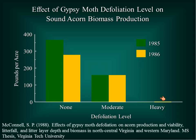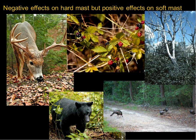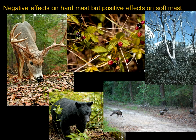The impact on wildlife is a mixed bag. Gypsy moth defoliation can have an adverse effect on hard mast like acorns, but it can also have beneficial effects — opening up the canopy and providing more light to species like Rubus that provide soft mast, and creating snags that promote nesting for certain bird species. So the effect on wildlife has both pluses and minuses; it's not a simple thing.